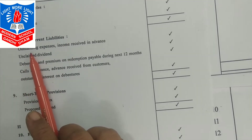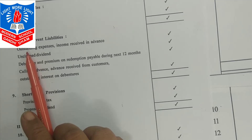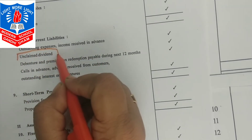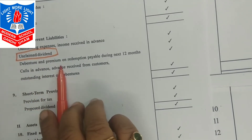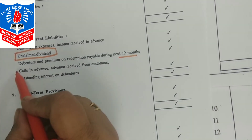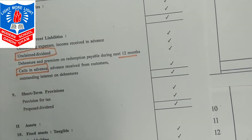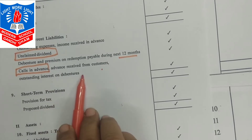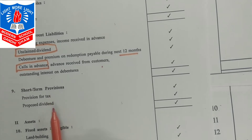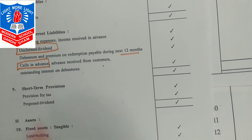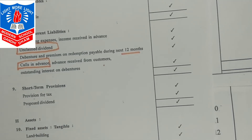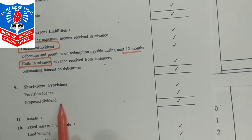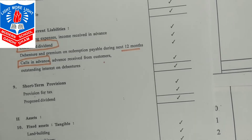Other current liabilities include outstanding expenses, income received in advance, unclaimed dividend, debenture premium on redemption payable within 12 months, call in advance, advance received from customers, and outstanding interest on debentures. Last but not least is short-term provisions — provision for tax and proposed dividend of the current year — which is very important.